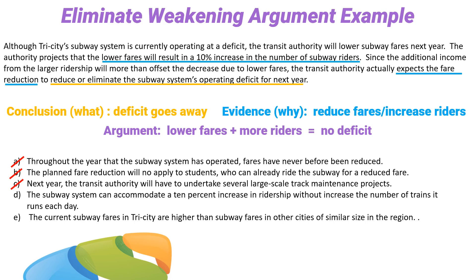Now, what about D? D is interesting. D says that we can accommodate a 10% increase in riders but not have to run more trains, so we can keep our costs the same while we increase the number of paying customers. Notice that D eliminates a weakening argument. A very effective weakening argument would have been: sure, you can accommodate more riders, but your costs are going to go up if you get more people using the system. D is saying, no, you don't have to worry about that argument. Costs won't go up if you can increase ridership by 10%. So D, we're going to keep around because it eliminates a weakening argument. What about E? E doesn't help at all. We don't care about other cities. So our correct answer choice is D.